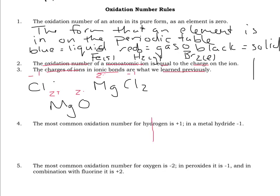Now we're going to start talking about covalent compounds. The common oxidation number for hydrogen is plus one. So in most compounds that hydrogen is found in — for example, methane — the oxidation number of hydrogen is going to be plus one. Same in water: the oxidation number of hydrogen is plus one. Hydrogen always has an oxidation number of plus one, and we're going to use this to help us solve for oxidation numbers of other elements.